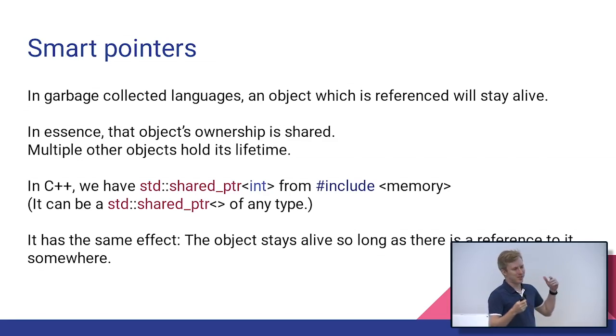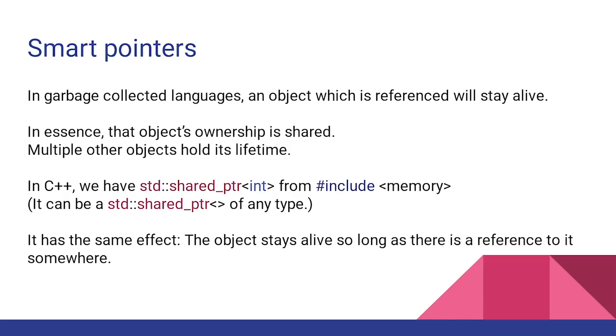So in a garbage collected language, you're familiar with, you know, if I have a reference, the thing stays alive, and I can have multiple references, and it's still going to be alive until the very last reference goes away. Then the garbage collector has a chance to come and clean that up. In C++, that would be a standard shared pointer, and you get that from include memory. So this represents like if the object lifetime should actually be managed by multiple things.